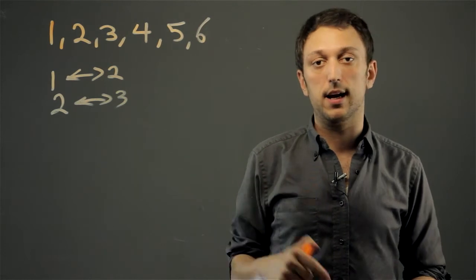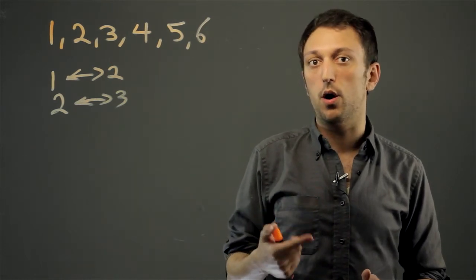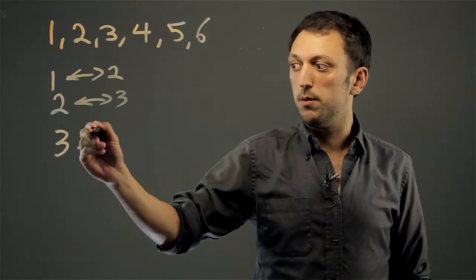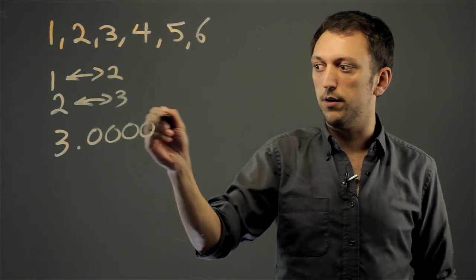Meaning, you could roll a die and get a 3.00005.